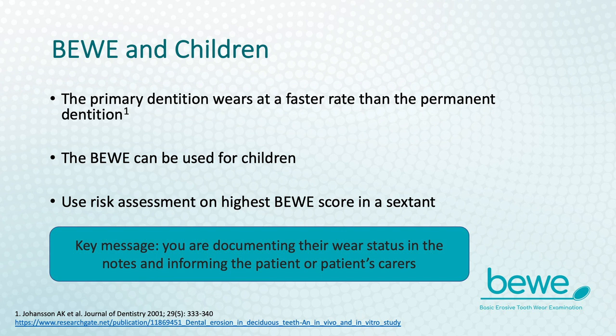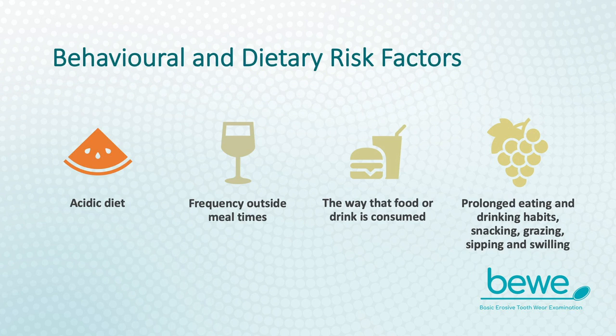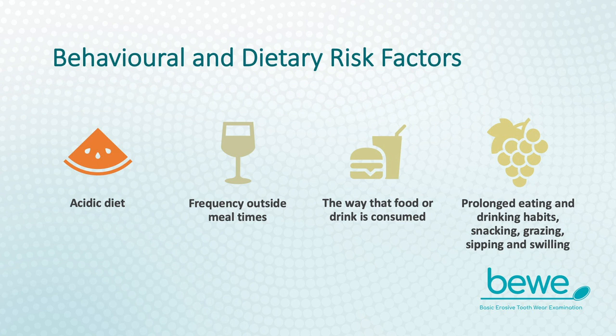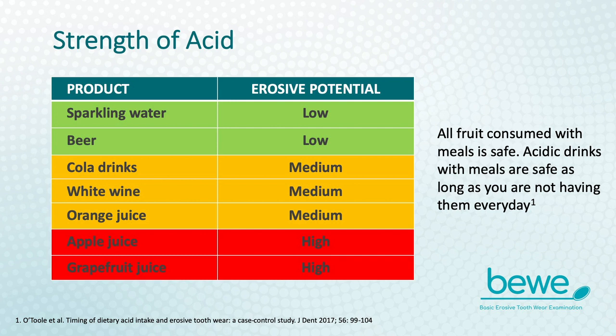Risk factors for erosive tooth wear are largely based on diet and behavioural factors. But please remember, it is not what you eat but how your patients eat or drink that really affects erosive tooth wear risk. Things you must consider include the frequency of consumption, particularly outside of mealtimes; the way that food or drink is consumed, for example swilling, swishing drinks or sucking on fruit; and prolonged eating or drinking habits such as grazing during the day or sipping on drinks. The erosive potential of foods and drinks is related to the strength of acid, partly based on pH, but also the strength of acid.